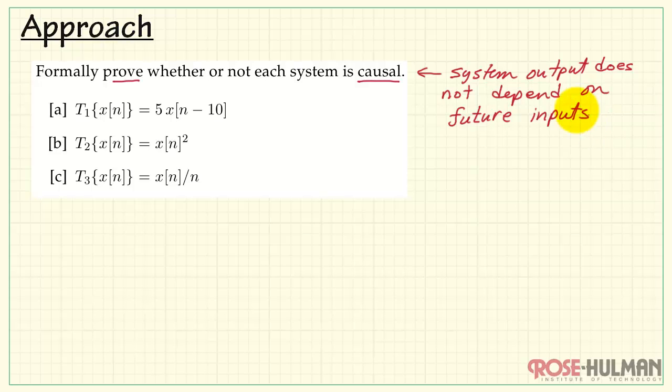When a system is causal, its system output does not depend on future inputs.